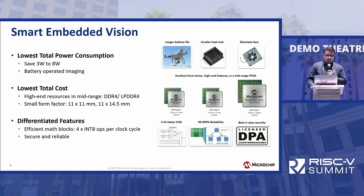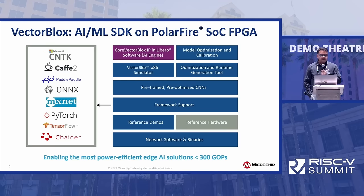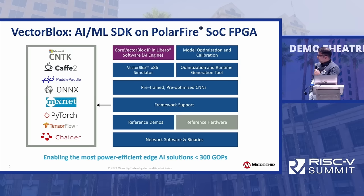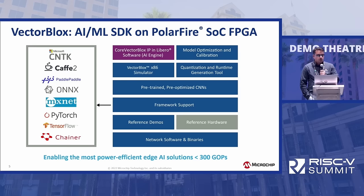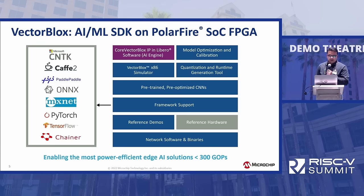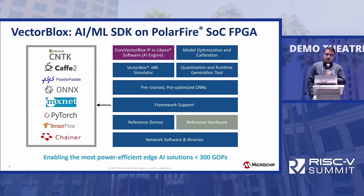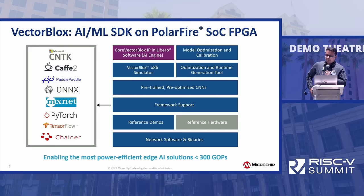Our AI-ML solution is called the Vector Blocks SDK. We enable you to use our SDK, port over your own model, and deploy the solution to our FPGA fabric. We support the vast majority of frameworks available out there — you can download a license from our website and port the solution over. We also have a Vector Blocks simulator so that even before you touch one of our FPGA boards, you can get a sense of the performance you're going to get. The entry barrier is really low. Our recommendation is that if your application needs less than 300 GOPs of performance, our FPGA would be ideal for you.